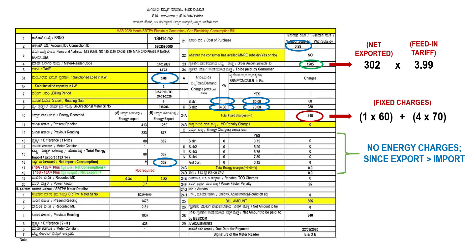There is no energy cost since the export is higher than the import, meaning no net energy has been taken from the DISCOM grid. However, there is a penalty of rupees 25 since the power factor was less than unity. The total liability from the consumer to the DISCOM is fixed charges plus energy charges plus penalty: rupees 340 + 0 + 25 = rupees 365. So the DISCOM pays the consumer rupees 1205, and the consumer pays the DISCOM rupees 365 — giving a net payment of rupees 840 from DISCOM to the consumer for March 2020.